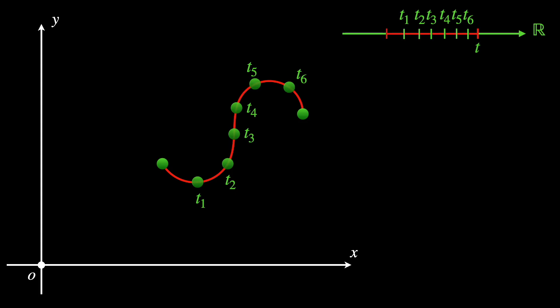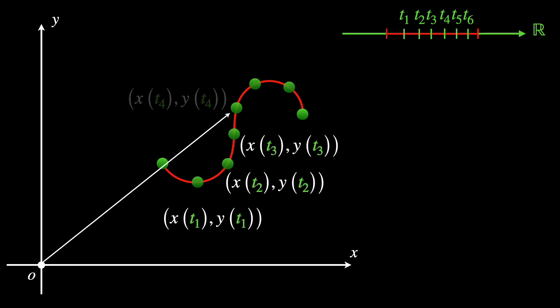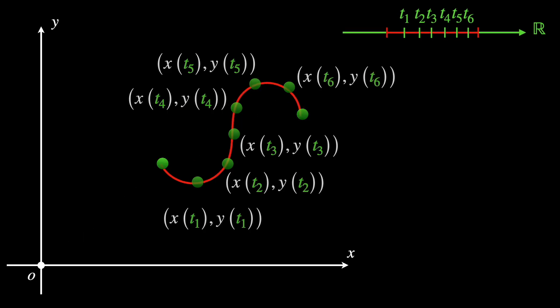This parameter t plays a very similar role to time, but not necessarily. It is useful though to think about it as the input and the vector given by the coordinates of the point as the output. So for every input of time there is an output of position.